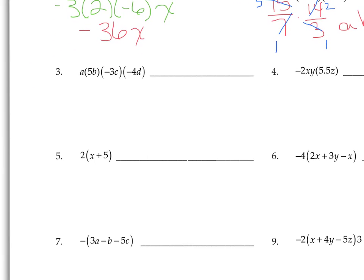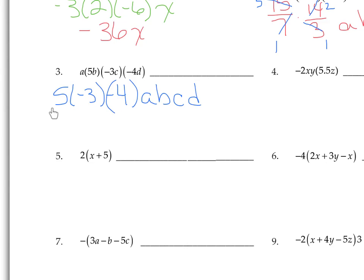On number 3, this is still all multiply — I know that because these parentheses are right next to each other. Bring all the number coefficients to the front: 5, negative 3, and negative 4. The variables A, B, C, D stay in the back. Positive times negative times negative makes positive. 5 times 3 is 15, times 4 is 60. So the answer is 60ABCD.